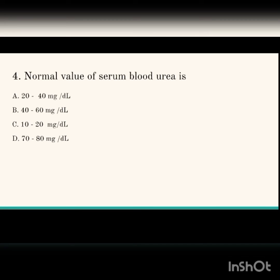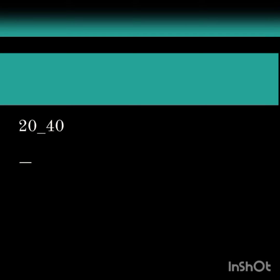Next question: the normal value of serum blood urea is 20 to 40 mg per deciliter.